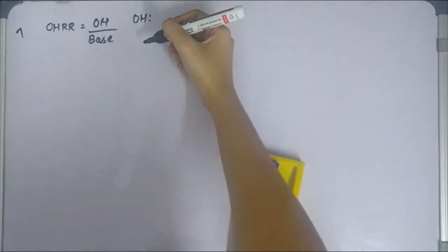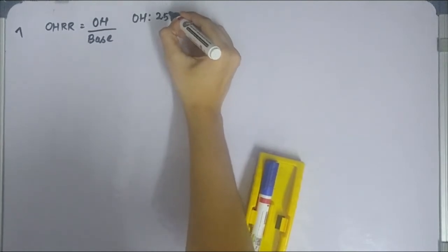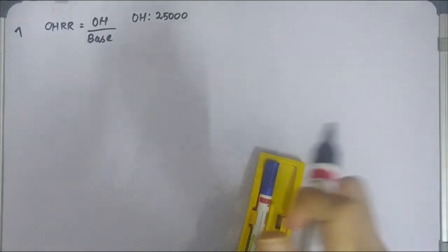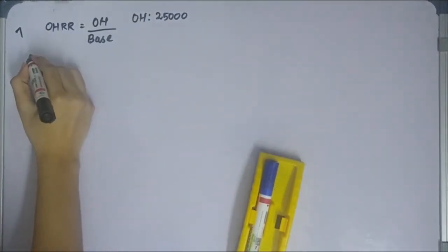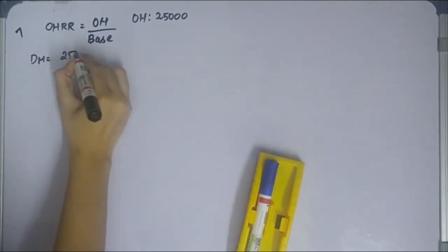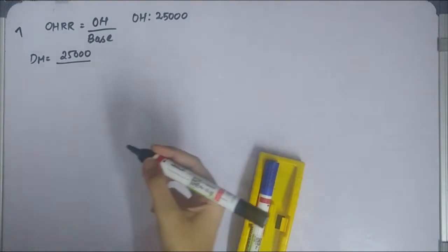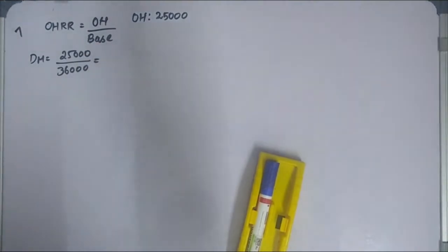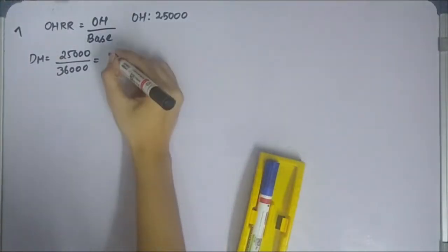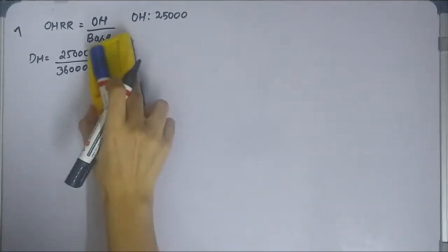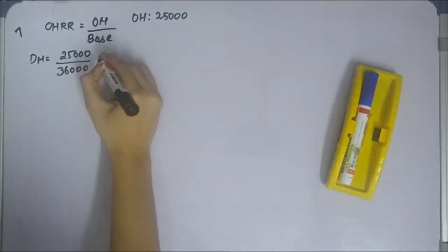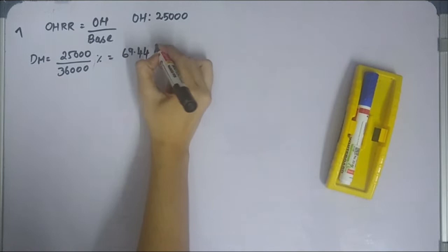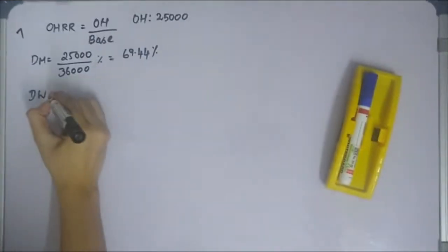For the direct material method: overheads chargeable to the department are 25,000 divided by direct material in the department, which is 36,000. This gives an overhead recovery rate of 69.44%.